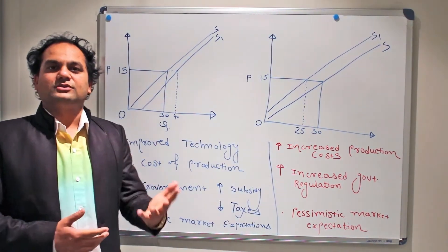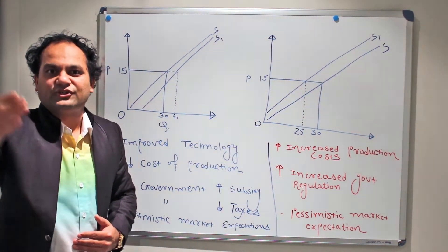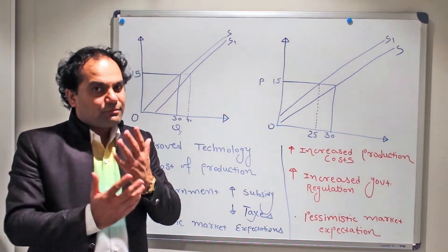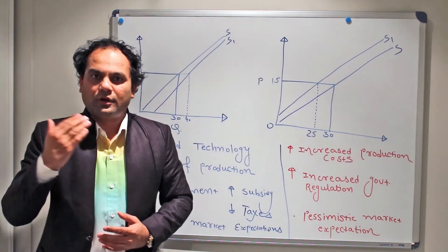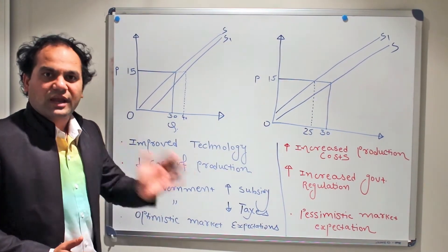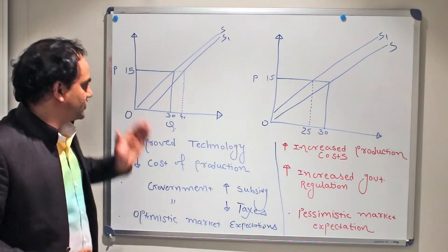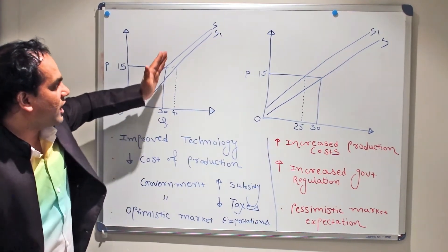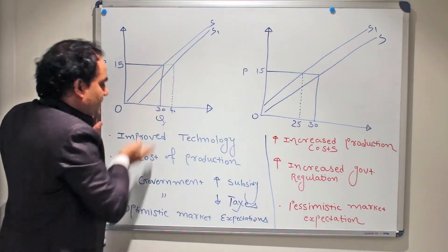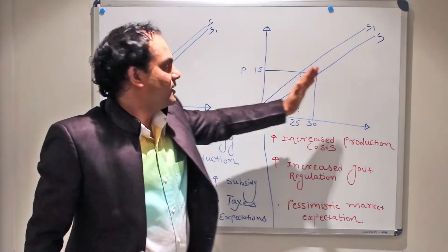Another favorable condition is optimistic market expectations. If there is optimism in the market — if everything is working nicely and there are high chances that prices will be skyrocketing in the near future — then producers will be inclined to produce more units at the given price. Even though there is no increase in price at the moment, they are expecting an increase in the near future, giving them an incentive to increase production. These favorable scenarios will move the original supply curve S to its right.